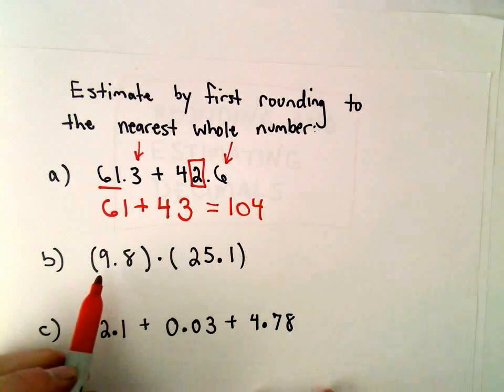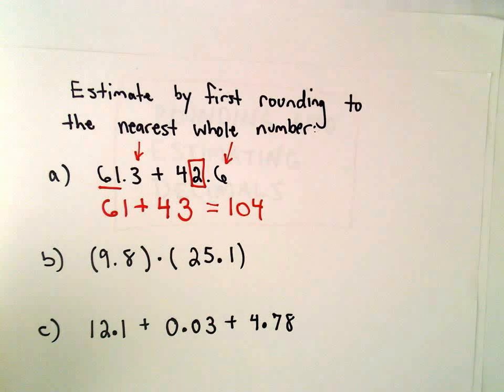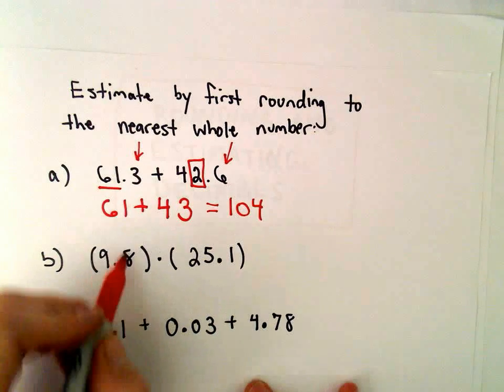So I think we'll get 104. You know, if somebody told me to multiply 9.8 times 25.1, I would say, uh, give me a second. If they said, what's it close to? Well, that's something I can do in my head.